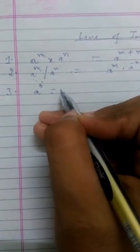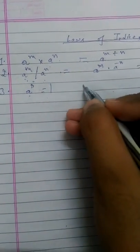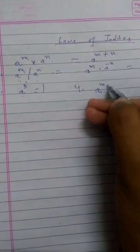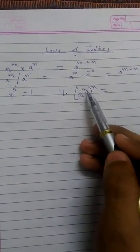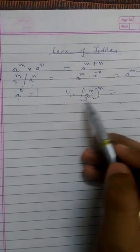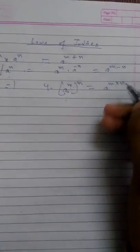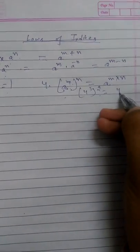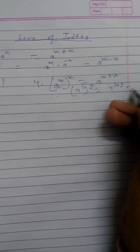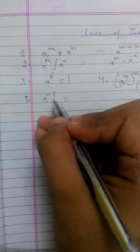The third law is: a raised to the power 0 equals 1 — anything raised to the power 0 is 1. The fourth law is: a raised to the power m, whole raised to the power n, equals a to the power m times n. For example, 4 raised to the power 3, whole raised to the power 2, equals 4 raised to the power 6.